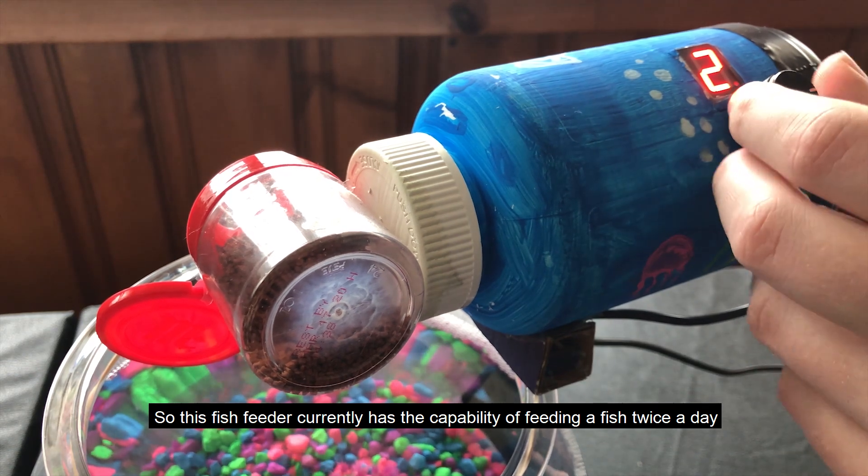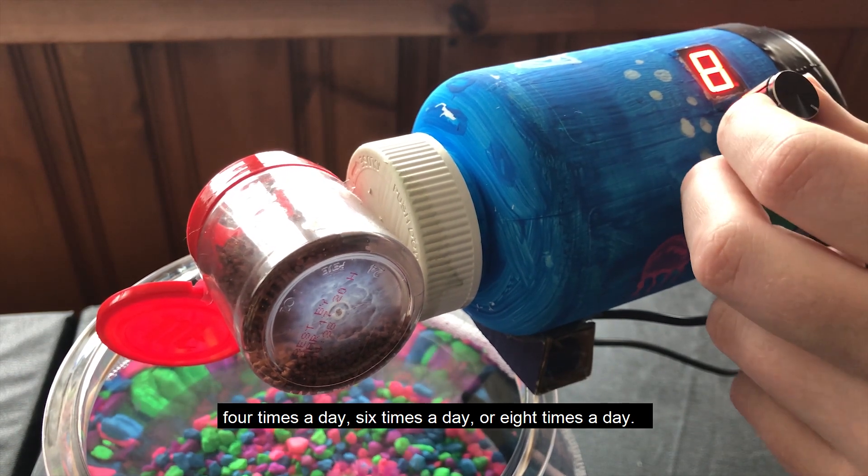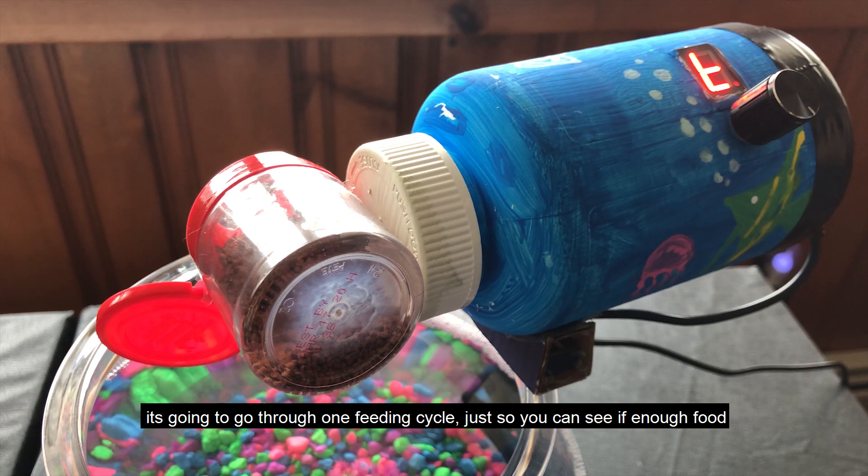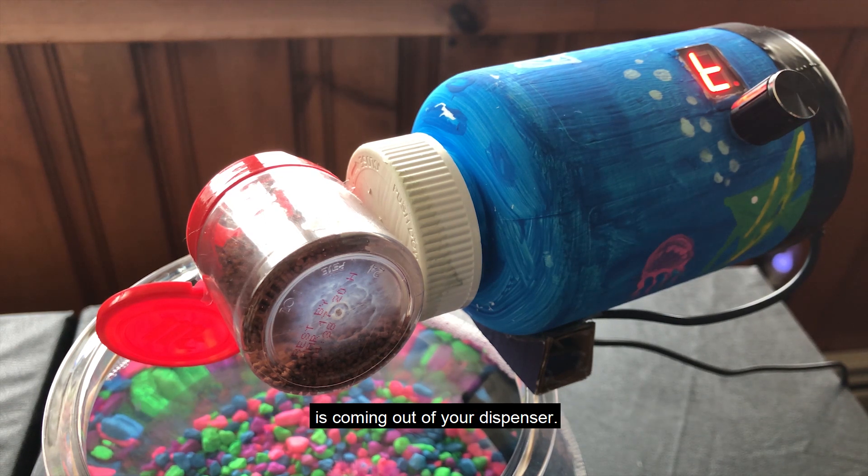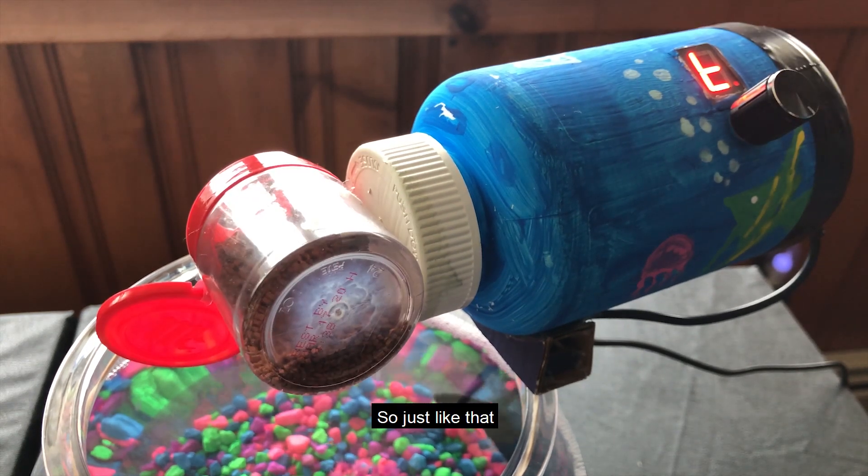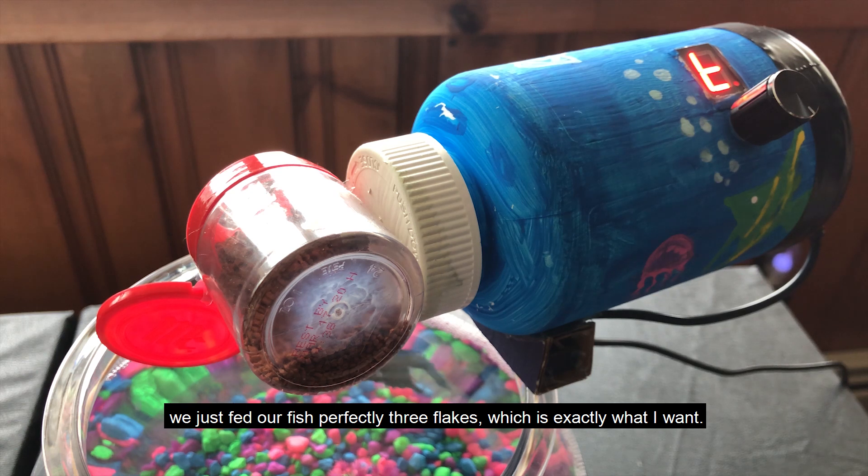You can also test the output. On T, if you click down the rotary encoder, it's going to go through one feeding cycle just so that you can see if enough food is coming out of your dispenser. Why don't we go ahead and test that out. Just like that, we just fed our fish perfectly. Three flakes is exactly what I want.